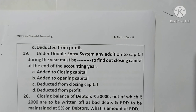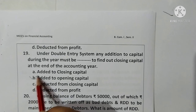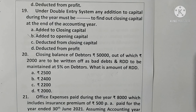Question 19: Under the double entry system, any addition to capital during the year must be added to opening capital to find out the closing capital at the end of the accounting year. Option B is correct.